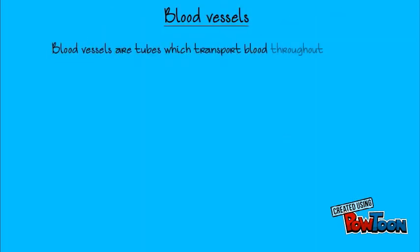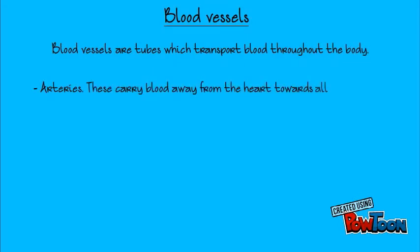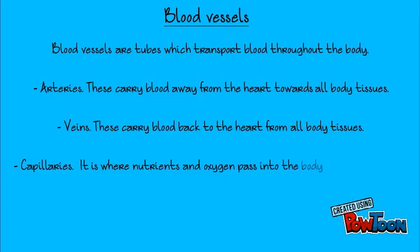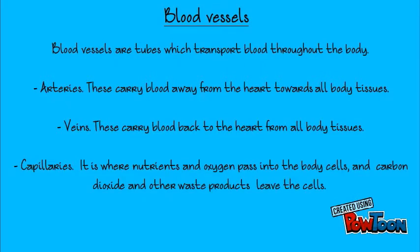Blood vessels are tubes which transport blood throughout the body. There are three types. Arteries — these carry blood away from the heart towards all body tissues. Veins — these carry blood back to the heart from all body tissues. And finally, capillaries — it is where nutrients and oxygen pass into the body cells, and carbon dioxide and other waste products leave the cells.